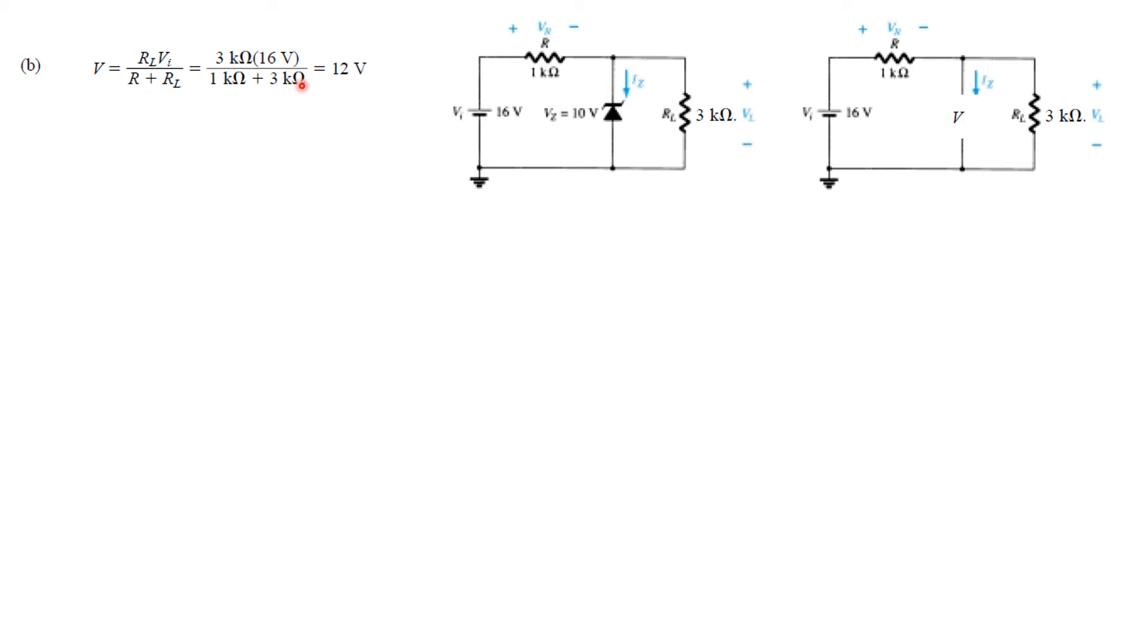So using this formula we have now calculated V to be 12 volt. Now the Zener is rated at 10 volt. So our V is greater than VZ and therefore the Zener is on. And therefore VZ is equal to 10 volt. So we just write here 10 volt.